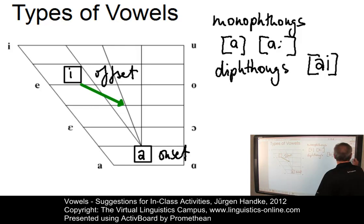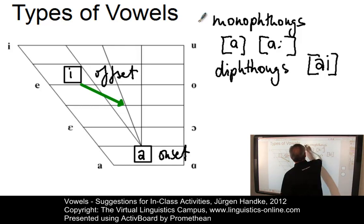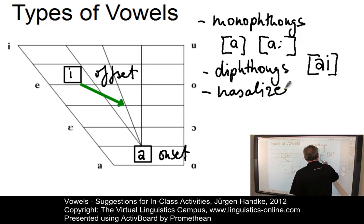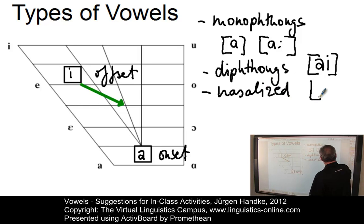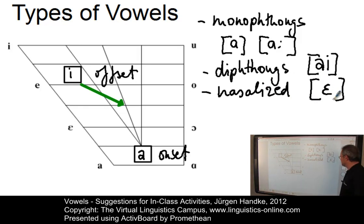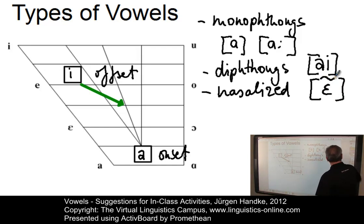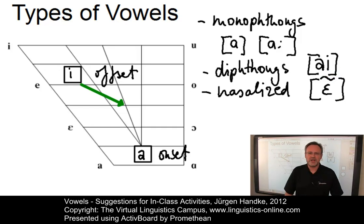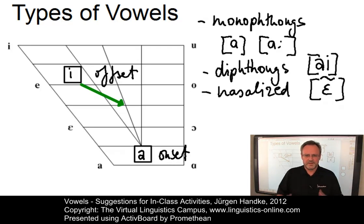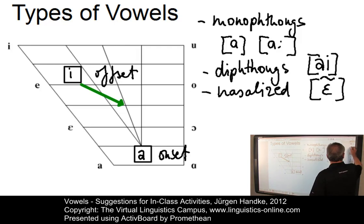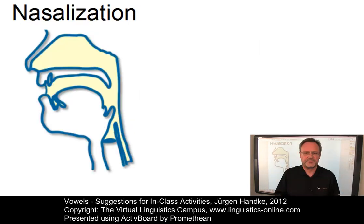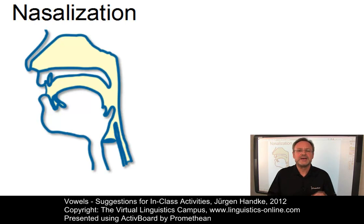The next type of vowel to cover is the nasalized vowel. First of all I would introduce what it sounds like: here we take a non-nasalized or oral vowel 'e', and if we nasalize we add the tilde symbol, giving 'ẽ'. But what is nasalization? I would tell the students the clear-cut definition of nasalization in contrast to nasal.